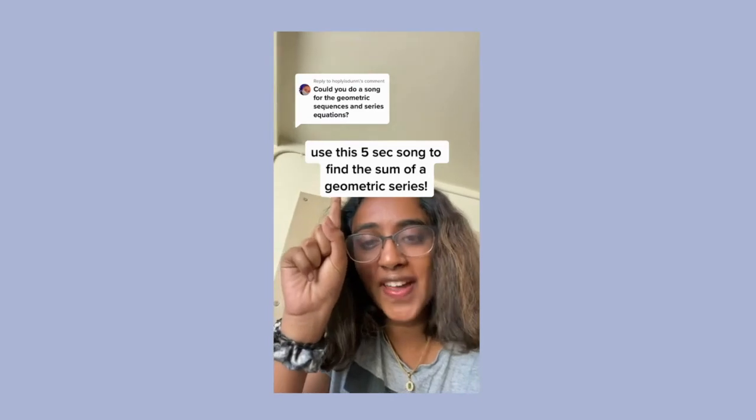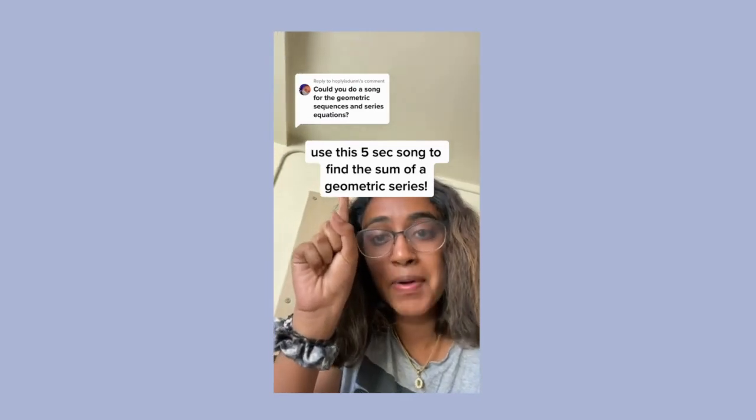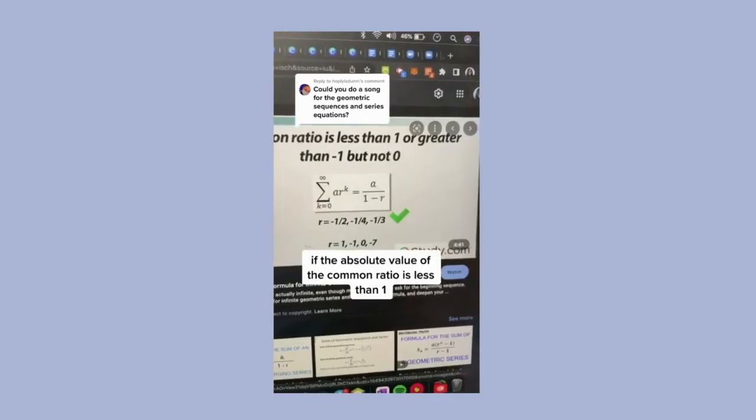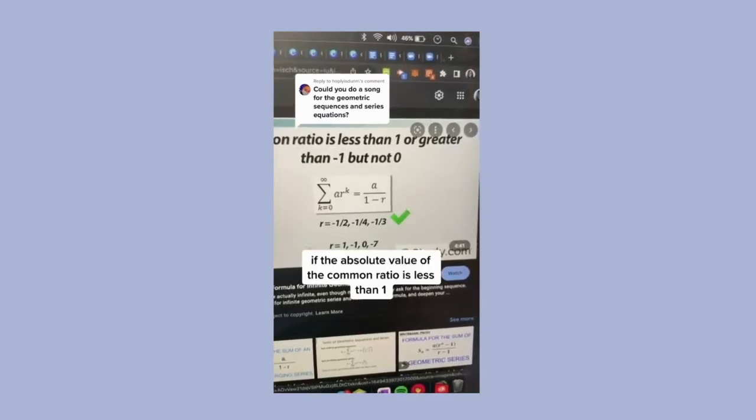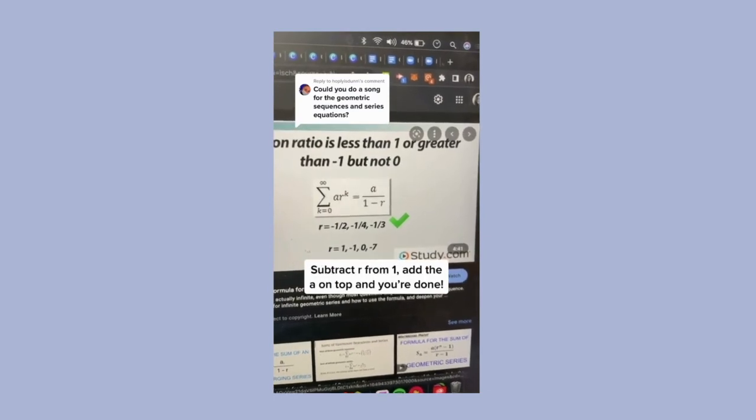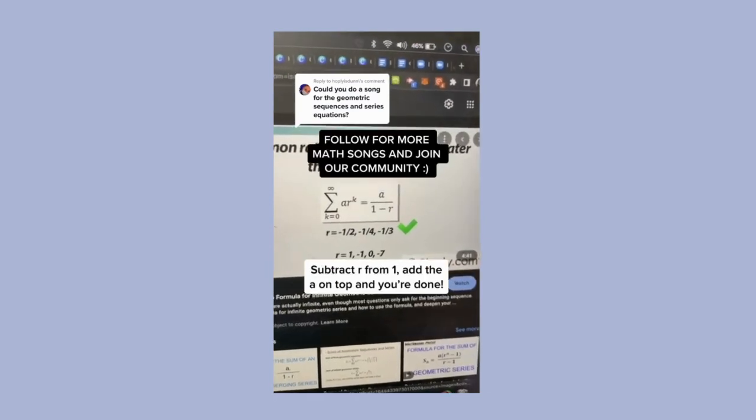Use this song to never forget how to find the sum of a geometric series. If the common ratio is less than 1, subtract it from 1, add an a on top and you're done.